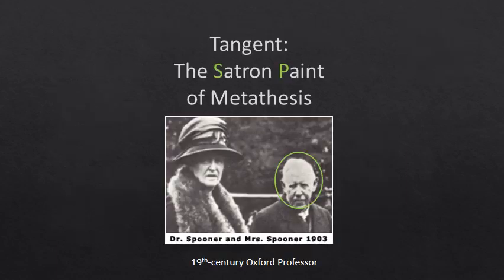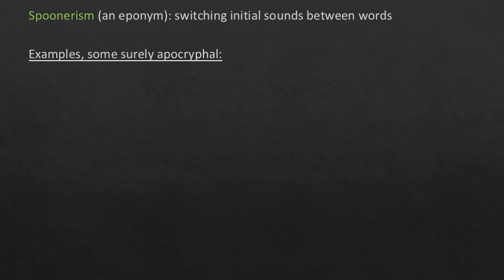I cannot talk about metathesis without talking about the patron saint of metathesis, who is Dr. Spooner — a 19th century Oxford professor who had a little bit of a speech impediment. Dr. Spooner gives us the term spoonerism. A spoonerism is a kind of metathesis, but it happens not between two sounds in one word, but the initial sounds in two words switch. Spoonerism is an eponym — a word named after a person or place. Sandwich is an eponym because there was an earl of a place called Sandwich in England who liked to eat his meat between bread.